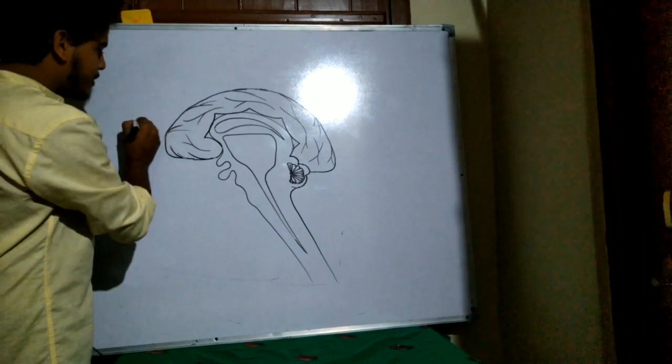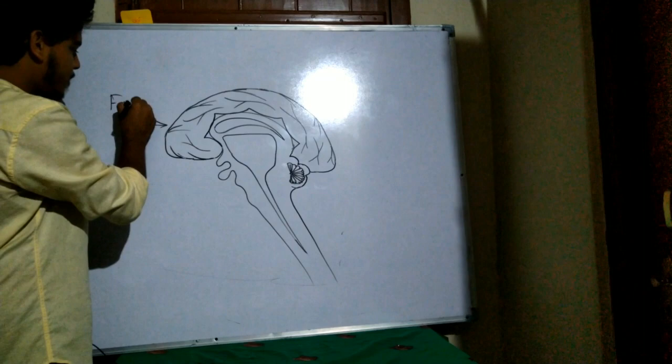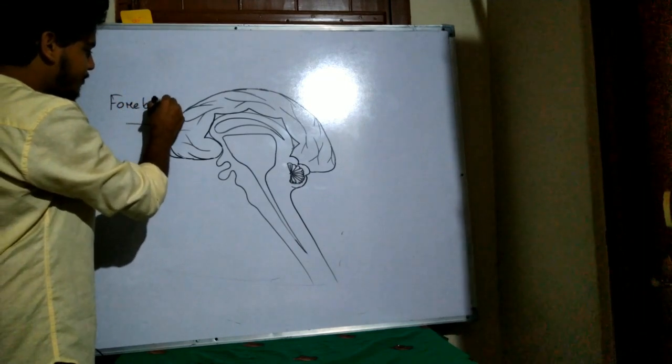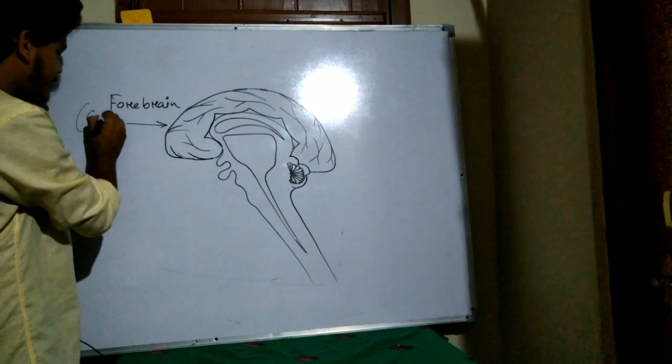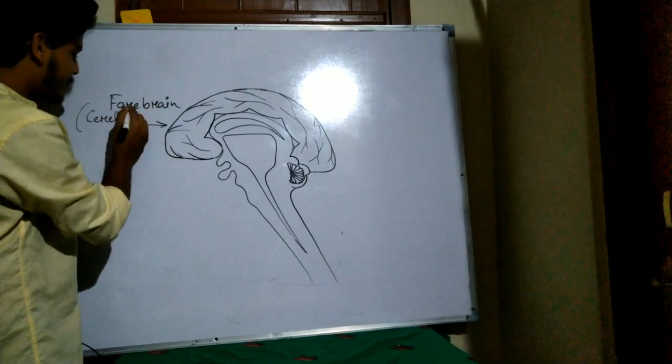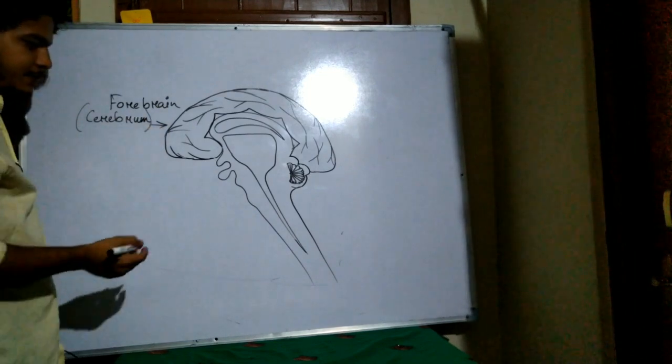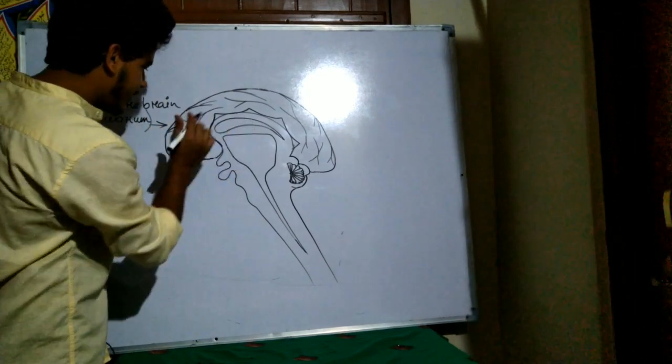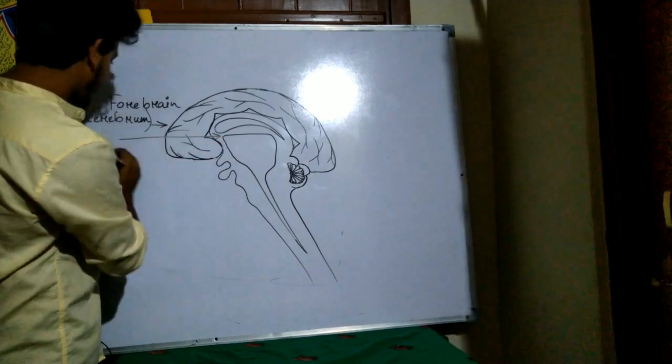For naming, this is the first part, this is forebrain. Forebrain version, we have this cerebrum. Then what we have? In this middle portion we know that one portion is there, thalamus.